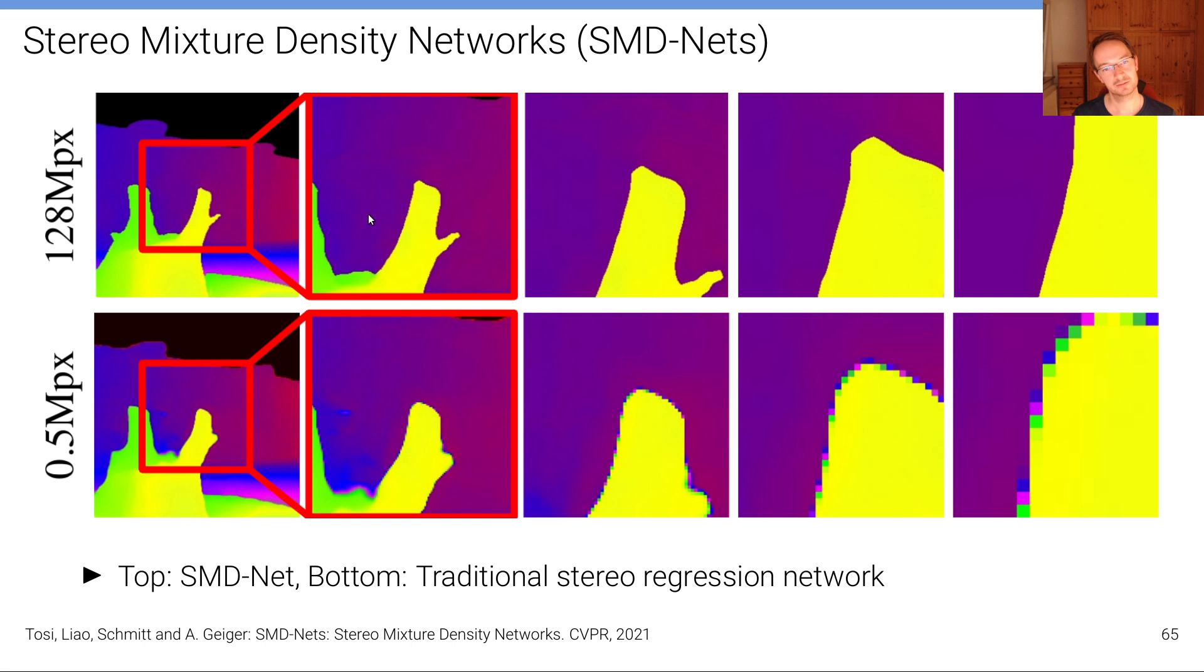While using the combination of this bimodal mixture model and this SMD head that allows for querying and also training a model at arbitrary spatial precision we don't get these bleeding artifacts and also at the same time we can query the output disparity map at much higher resolution like 128 megapixels as in this example here. That's all for today.